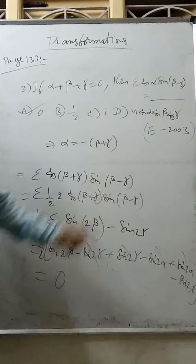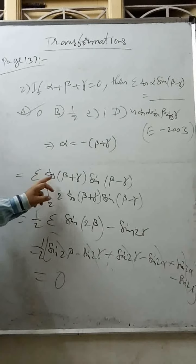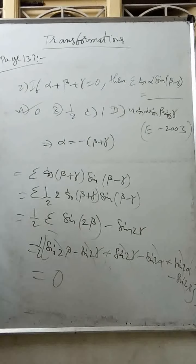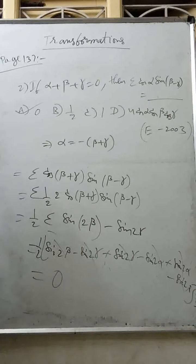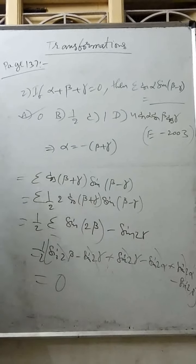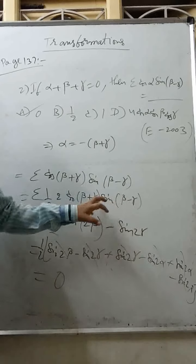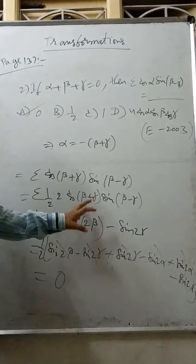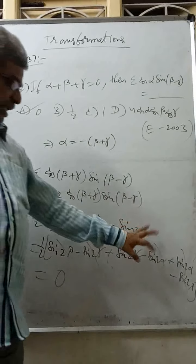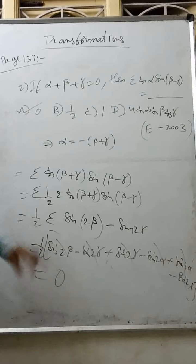Re-confirming: α = -(β+γ), so cos(α/2) becomes cos(β+γ) by symmetry. Doing (1/2)·2 cos A sin B = sin(A+B) - sin(A-B): sin(A+B) = β+γ+β-γ = 2β; sin(A-B) = β+γ-(β-γ) = 2γ. Expanding sigma in 3 cyclic order, everything cancels — zero is the final answer.